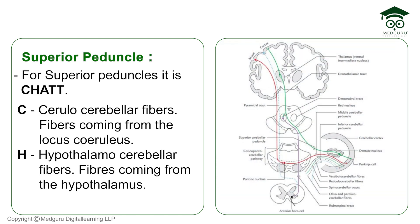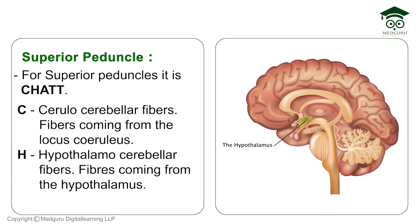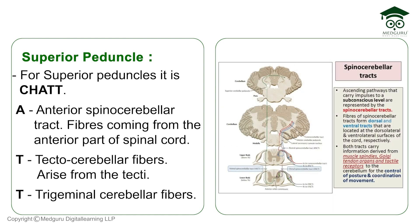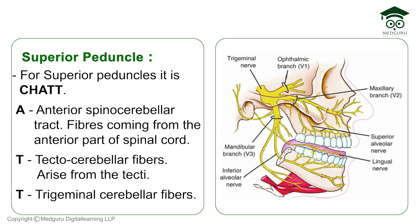For the superior peduncle, C-H-A-T-T: C is for ceruleocerebellar fibers, coming from the locus ceruleus, a structure present on the floor of the fourth ventricle. H stands for hypothalamocerebellar fibers, coming from the hypothalamus. A stands for the anterior spinocerebellar tract, coming from the anterior part of the spinal cord. The first T is for tectocerebellar fibers, arising from the tectum of the midbrain, and the second T is for trigeminocerebellar fibers.